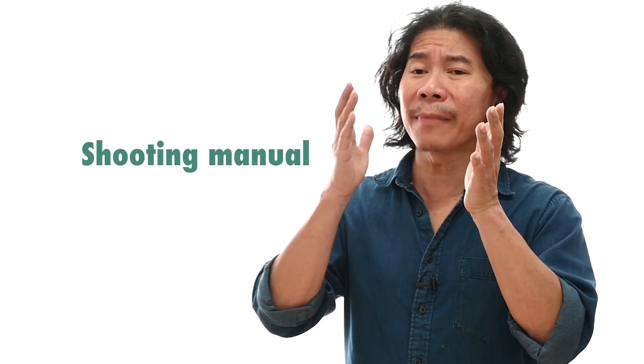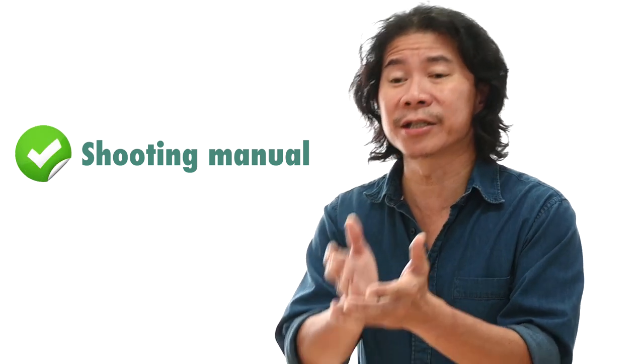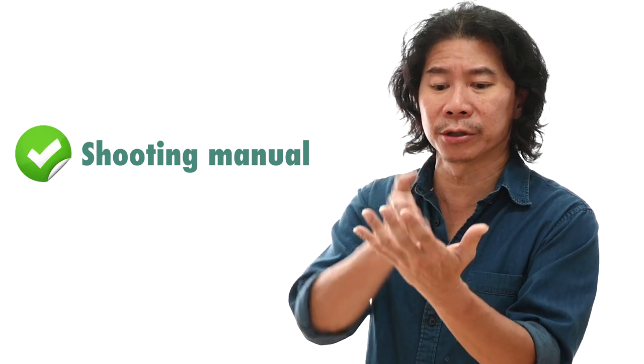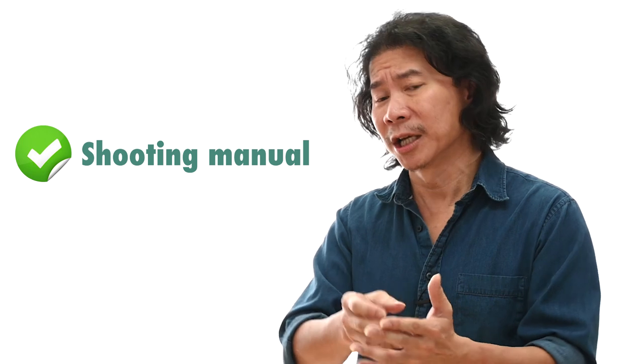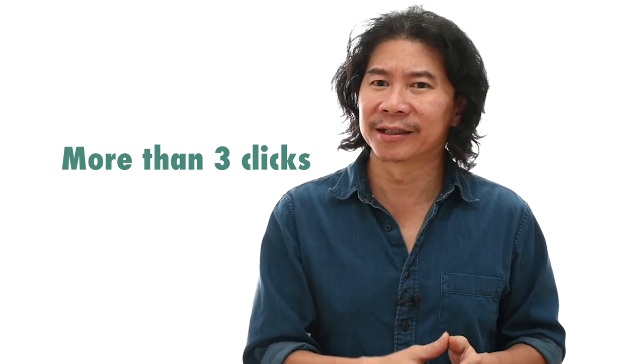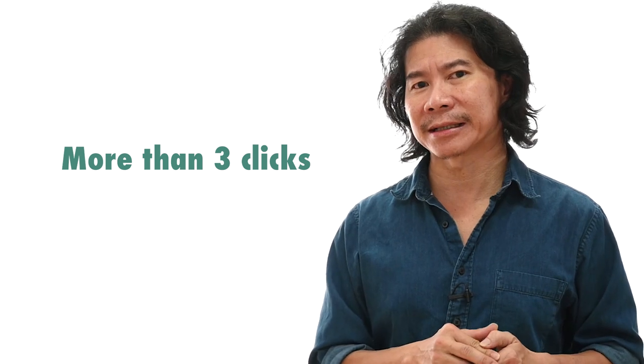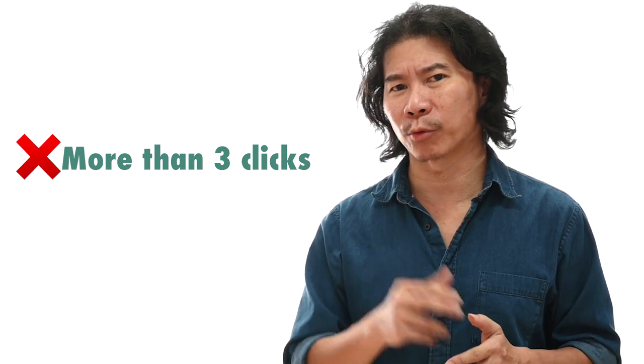And that's the important lesson we want to learn here today. Shooting manual is a good achievement. It's a good way to progress. It gets you to work on your exposure to be spot on. But having more than three clicks to get a photo to be nice, it's not good. Let me explain why.